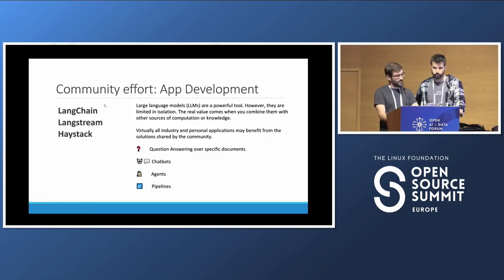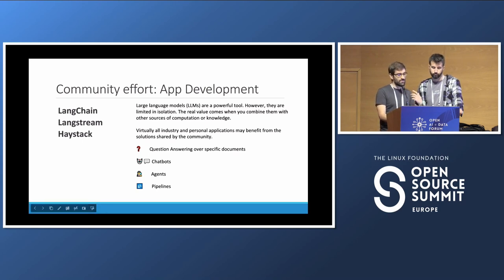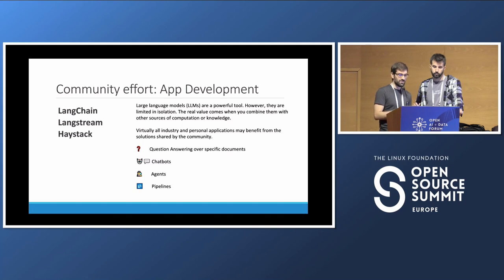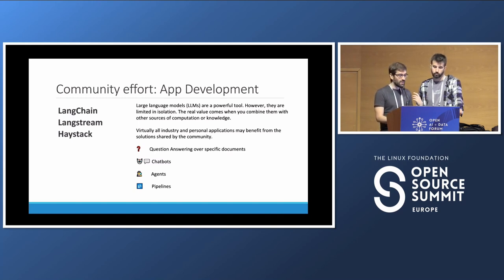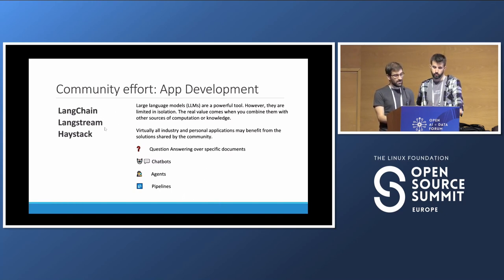These are some different tools you can use for app development. They make your life easier to interact with LLMs — agents, chatbots, pipelines, question and answer — and they give you templates to interact with the tools. Let's say you start with OpenAI because it's the easiest one right now, but then you want to host your own model. These frameworks make it really easy to just switch over to your own model. We are very familiar with LangChain — that's the tool we have used in most of the examples — but the others are also very good.